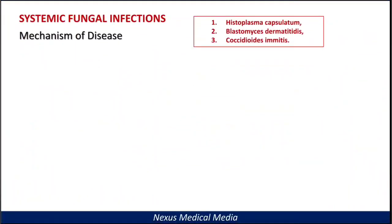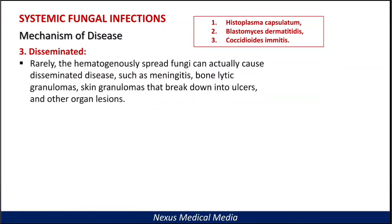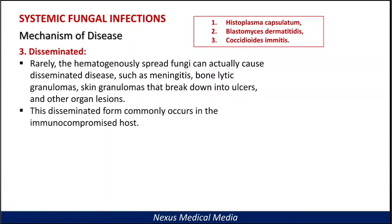The third presentation is dissemination. In the disseminated form, which occurs rarely, the hematogenously spread fungi can cause disseminated diseases such as meningitis, bone lytic granulomas, skin granulomas that break down into ulcers, and other organ lesions. This disseminated form commonly occurs in those who are immunocompromised.